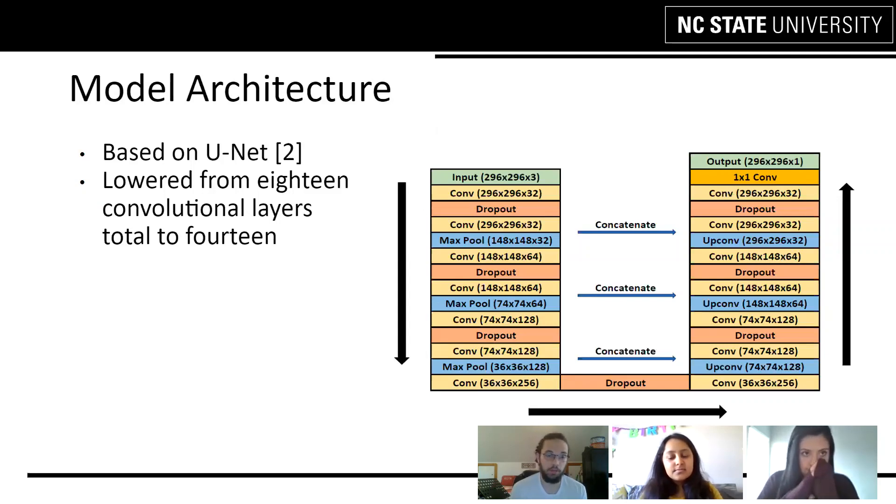For our model, we were able to lower the total amount of convolutional layers from 18 to 14. And we were also able to use almost half as many trainable filter kernels as the U-Net used. All of our kernels were 3 by 3, and all the activations that we used were ReLU, except for the very last 1 by 1 convolutional layer, which used a sigmoid.